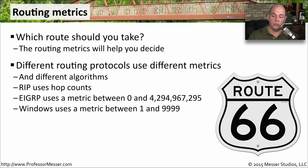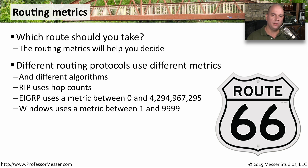In Windows, in the operating system itself, you will see metrics somewhere between 1 and 9999, and that's one of the ways that Windows is able to determine what the best route to a location may be.